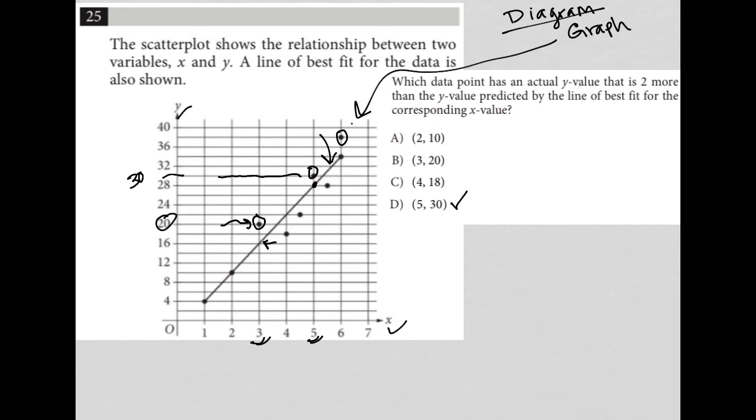Lastly, the last one we have is when x is 6. The line of best fit says we should be at 34, but it's actually at 38. That's another four higher. So choice D is the best answer here.